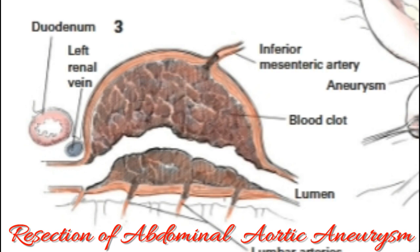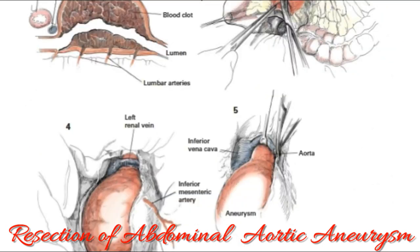With an electrocardiogram and imaging stress test, a thorough cardiac evaluation is performed for elective resection. The preoperative preparation consists of emptying the large intestine by administering a mild cathartic. A fluid load of crystalloid is given at approximately 100 to 150 milliliters per hour beginning the evening before the operation.